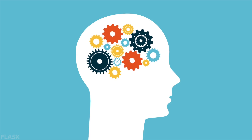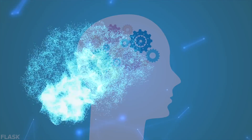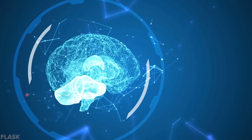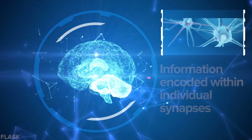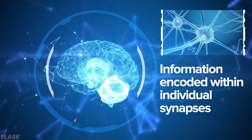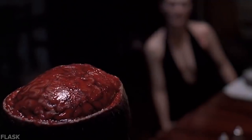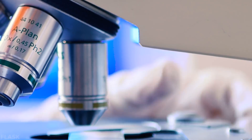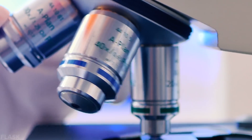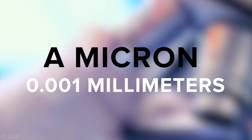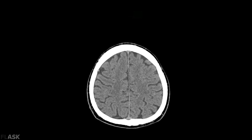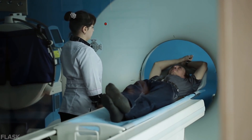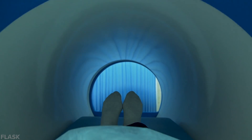If we do manage to understand the relationship between different neurons and how our brains work as a whole, we then face the problem of actually scanning it. We currently don't have the technology to image our brains with the resolution needed to determine the details of individual synapses. We're talking about non-invasive methods here. We would need fundamental breakthroughs in imaging technology to reach resolutions in the order of microns — a thousandth of a millimeter. Currently our best non-invasive scanning method is the MRI, which has a resolution of about half a millimeter.